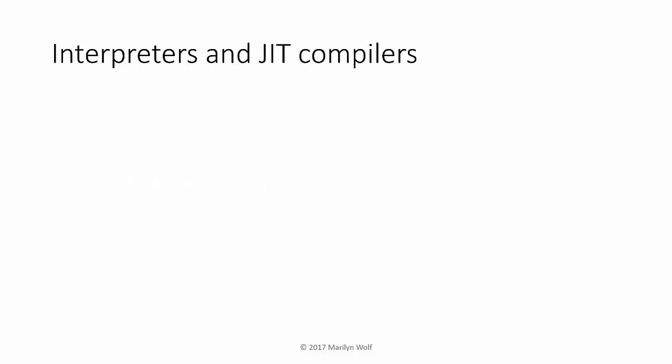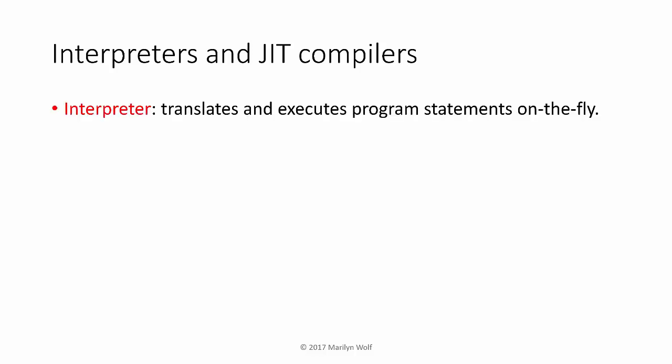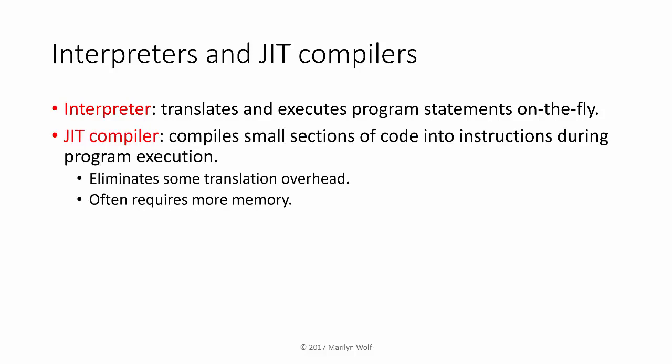Interpreters and just-in-time compilers are often used to implement abstract machines. An interpreter translates and executes program statements on the fly — Basic is the classic example of an interpreted language. A just-in-time, or JIT, compiler compiles small sections of code into instructions which are then executed as needed — Java is the classic example of a JIT-oriented language. This approach reduces some translation overhead but may require more memory.